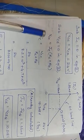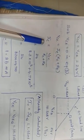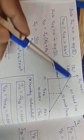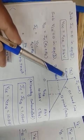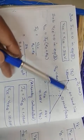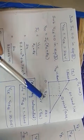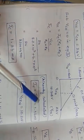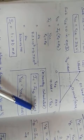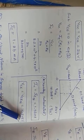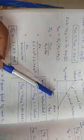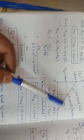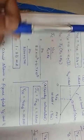Substituting VCE = 0 to get the y-axis point, IC = 1.86 milliamps. Connect these two points to get the DC load line. The Q-point is located at the coordinates IC = 1.06 milliamps and VCE = 10.308V, which we already calculated — where those two coordinates meet on the load line.